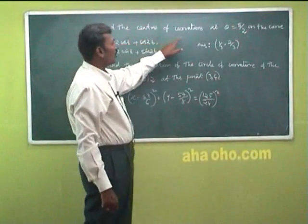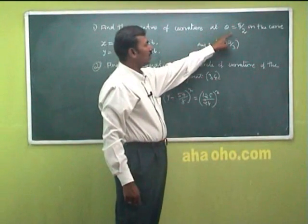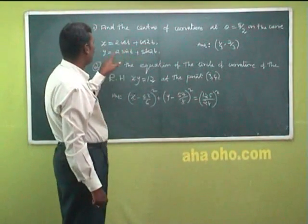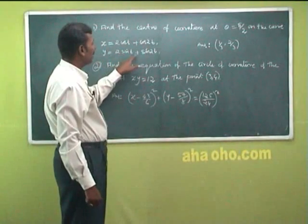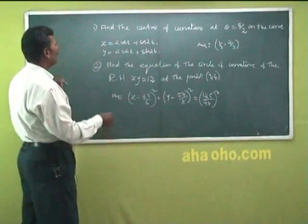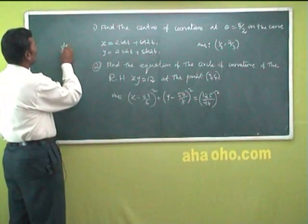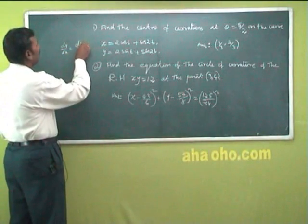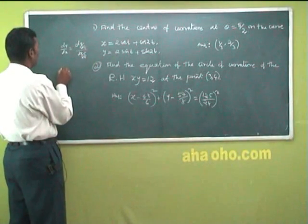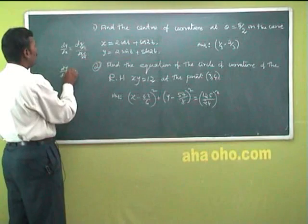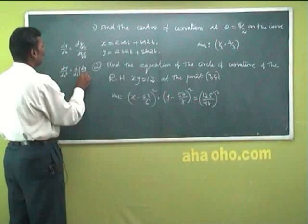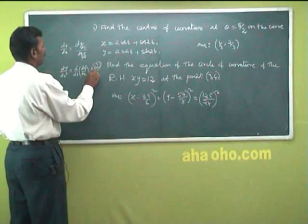Find the center of curvature at θ = π/2 on the curve x = cosθ + cos2θ, y = 2sinθ + sin2θ. Using the parametric formula: dy/dx = (dy/dt)/(dx/dt), and d²y/dx² = [d/dt(dy/dx)] · (dt/dx).